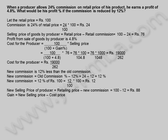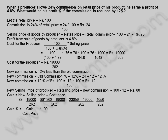Gain = new selling price minus cost price = 88 − 19000/262 = (88 × 262 − 19000)/262 = (23056 − 19000)/262 = 4056/262.